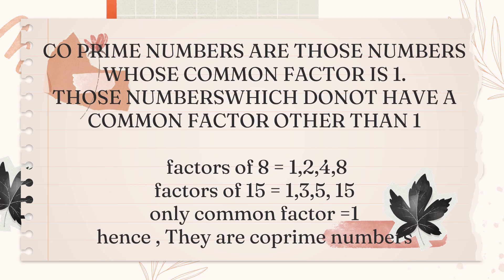Now, we spot that there is only one common factor which is 1. 1 is lying here also and here also. Because the common factor is only 1, therefore they are called co-prime numbers.